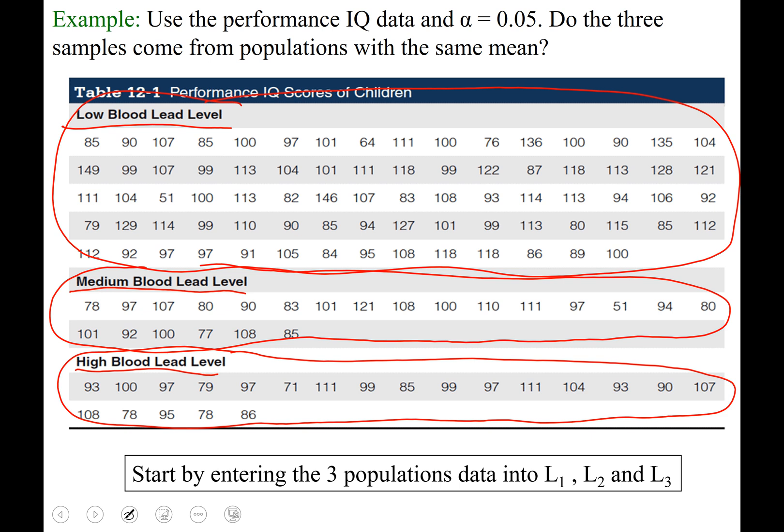To start running our test, we enter the three populations data into L1, L2, and L3. So we're going to enter this top group all into list one. Second group all into list two. And the third group all into list three. Now, if you are using StatCrunch or Excel, this is really going to save you a lot of time. You can copy and paste this set of data into StatCrunch or into Excel.